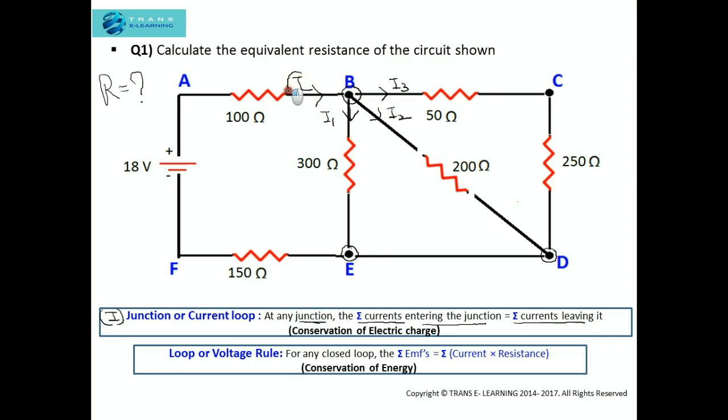So that means if this current I is entering this junction B, then the same amount of current should leave this junction.